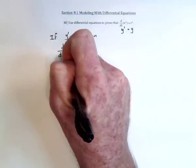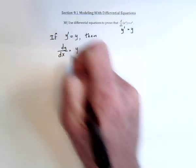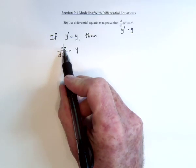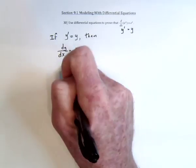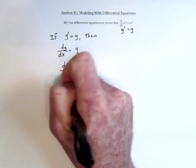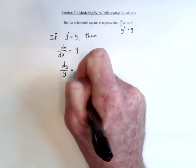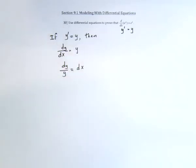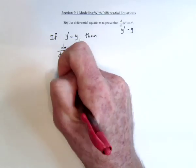Now what we do is do something that's called separate the variables. All the stuff that has y is going to be on the left-hand side. All the stuff that has x is moved to the other side. Now that you've done that, integrate.